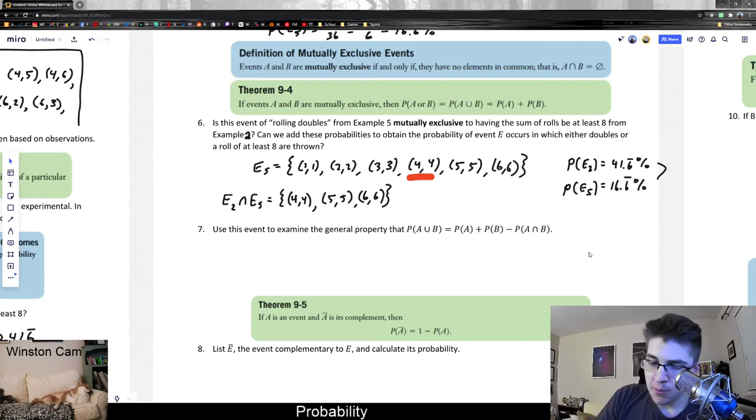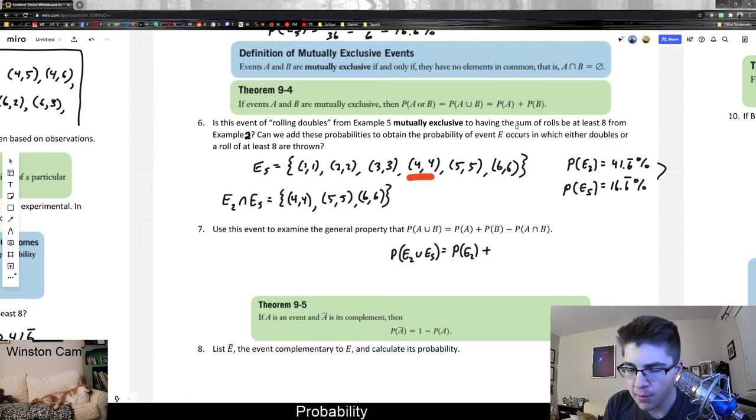This is similar to a cardinality formula which we had back in chapter two. But anyways, so the probability of A union B, which would be just joining two events together and figuring out the probability of either or happening, it says it's going to be equal to P of A plus P of B minus P of A intersect B. So looking at it in this case, the probability of one event, it should be the probability that either E2 or E5 happen is equal to the probability of E2 happening plus the probability of E5 happening and minus the probability of the intersection happening.